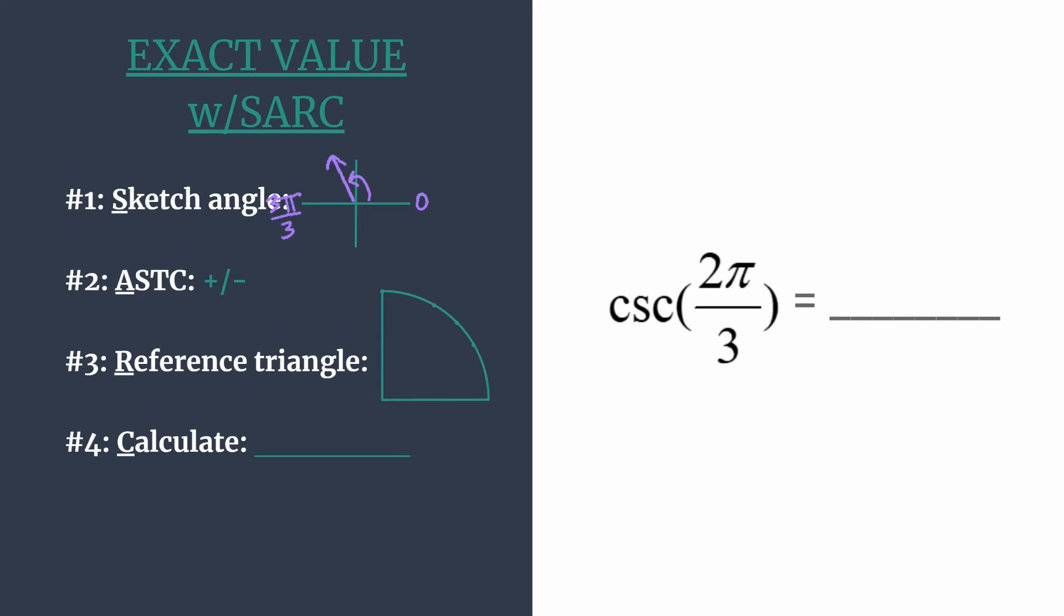Now that we've done that we can move on to step 2 and use ASTC which is just a quick abbreviation or an acronym to help us know which trig functions are positive in each quadrant. In the first all are positive, in the second which is the one we're concerned about, sine and its reciprocal cosecant are positive.